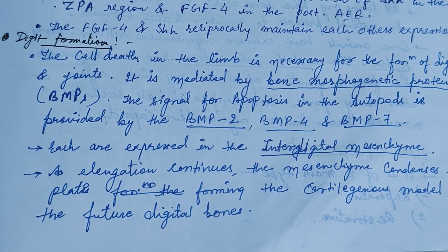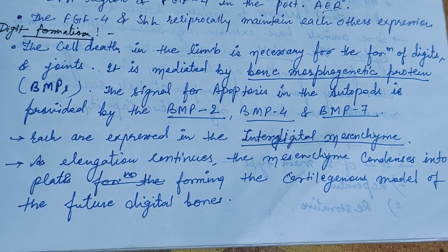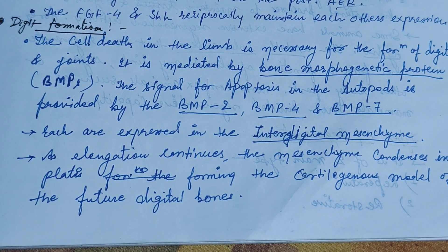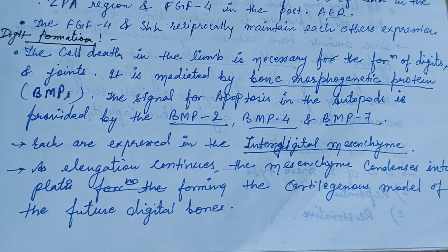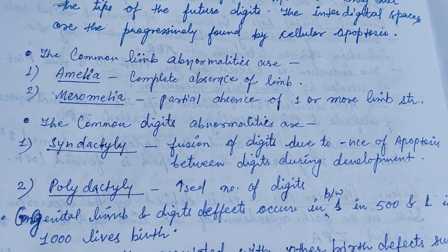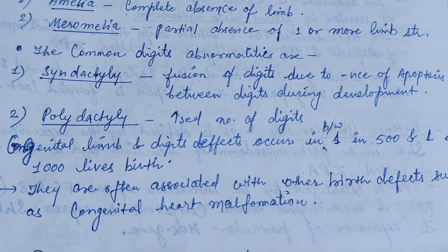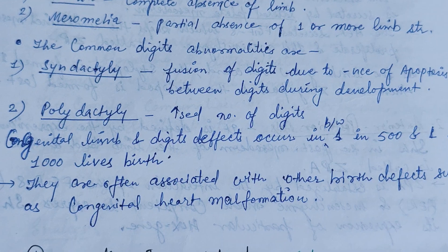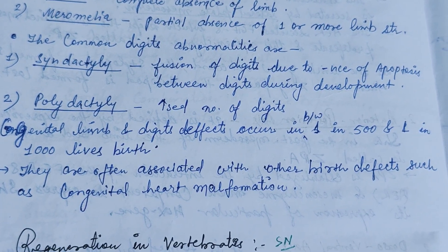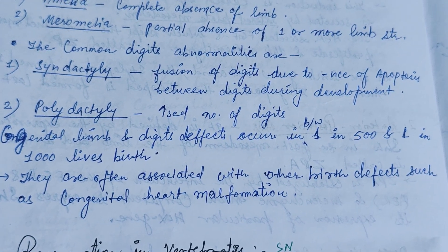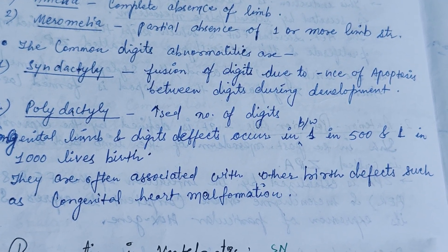Digit formation: cell death in the limb is necessary for the formation of the digits and joints, regulated by BMP genes (bone morphogenetic proteins) — BMP2, BMP4, and BMP7. As elongation continues, mesenchyme condenses into plates forming the cartilaginous model of the future digit bones. Common limb abnormalities include amelia (complete absence of a limb) and meromelia (partial absence of one or more limb structures). Common digit abnormalities include syndactyly (fusion of digits) and polydactyly (increased number of digits). Congenital limb defects occur in 1 in 500 to 1 in 1000 live births and are often associated with other defects such as congenital heart malformation.